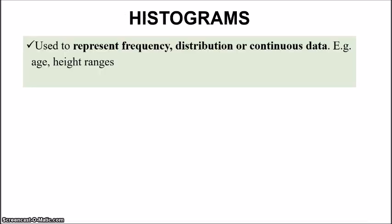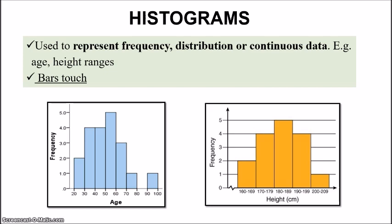The histogram is used to represent frequency distribution or continuous data — such as age ranges or height ranges. In this case, the bars are touching. The two histograms shown here have all bars touching. It displays frequency — how often a particular value occurs. For example, the age histogram shows how many people fall within a certain age range, and the height histogram shows how many people have a height between 160 to 169 centimeters. This is continuous data, so the bars touch.